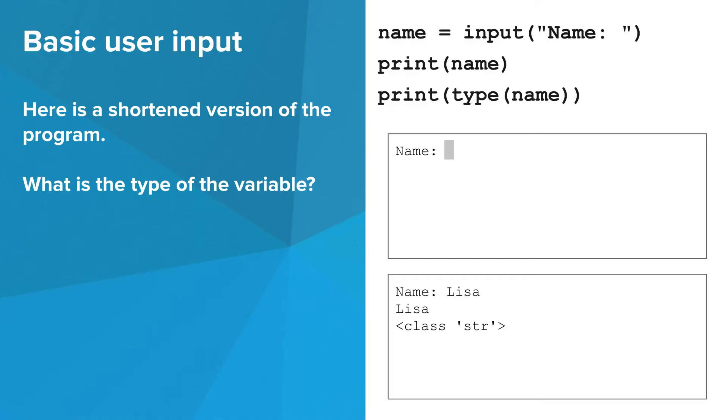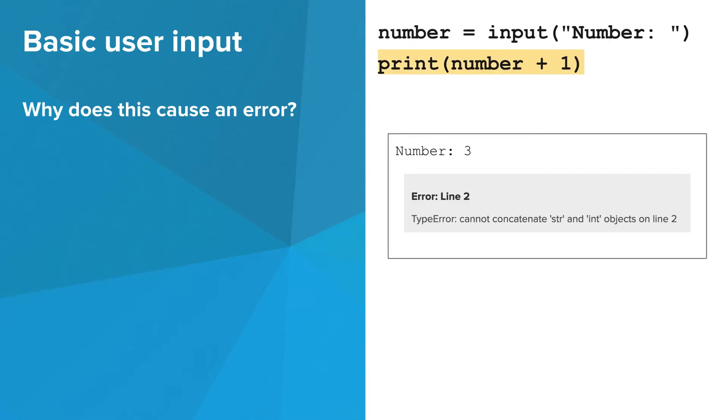Notice that the type of the variable where the input is stored is str or string. This makes sense because the user entered a bunch of text. But what if the user enters a number? It turns out the type of the variable is still str. This is a problem if you want to perform some mathematical operation on a number entered by the user. The program at the right causes an error because the type of the variable number is str, and you cannot use the plus operator on a str and an int.